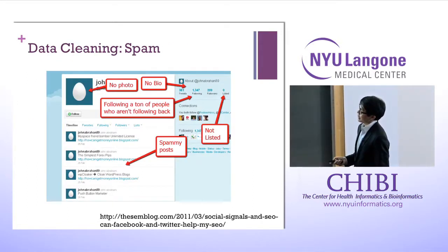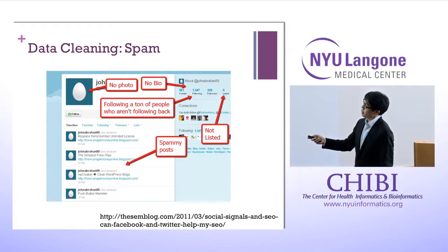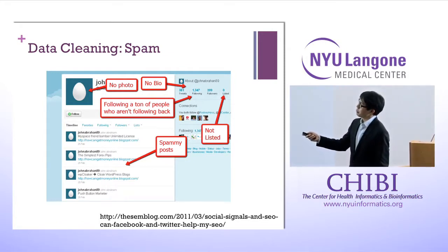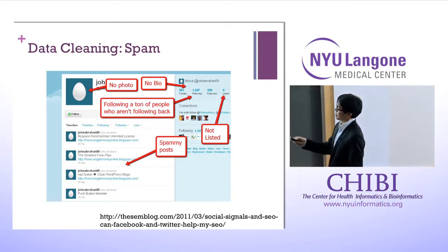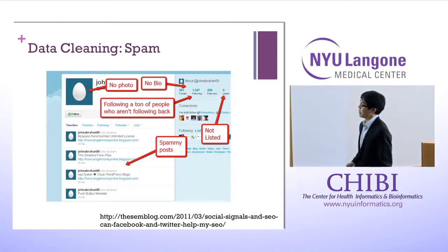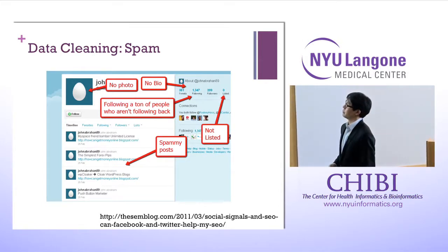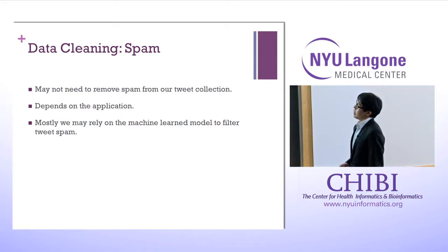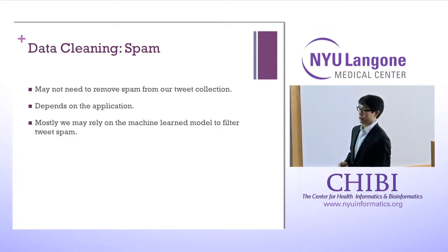Data cleaning: here's an example of a spam account. Characteristics used to identify spam include no photo, no bio, not many people following back, and spammy posts with links trying to get you to purchase something. For some applications we do need to clean tweets to reduce the number people need to label. But for most applications, we rely on the machine learning model to filter out spam.